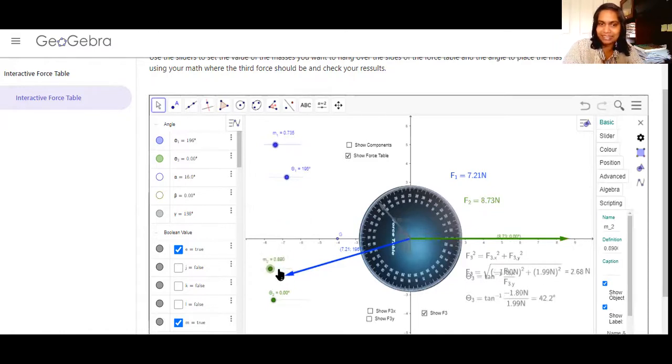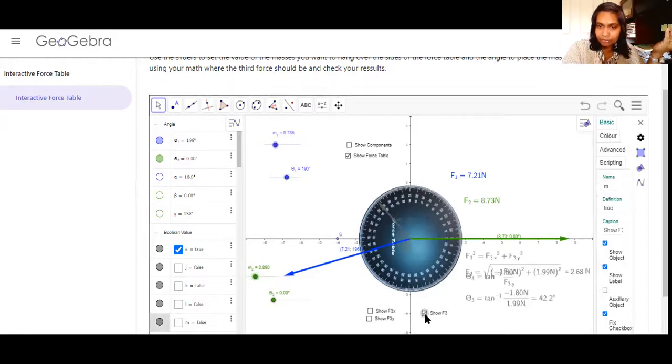This is not exactly the values that you will be using. You will be using different numbers. So your vectors will look a little different than what I have here. If you want to check your answer or if you want to see the resultant force, click on this show F3, then you can read the numbers.